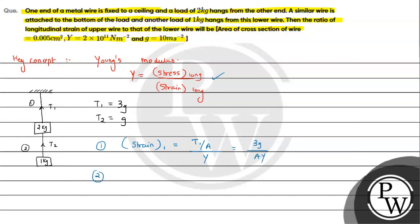Similarly, for the second wire, if we write longitudinal strain, it will be T₂ by A divided by Y, because the material is the same, so Young's modulus will be the same. So it will be g upon AY.